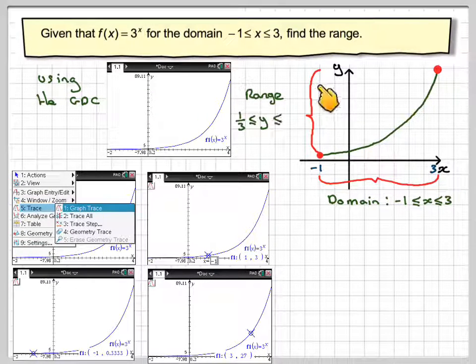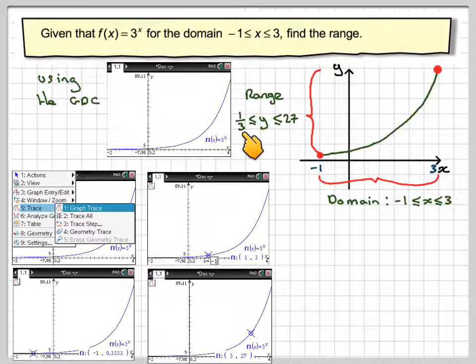And this is the range, which 0.33, you have to interpret as 1 third, and then the upper bound will be 27.